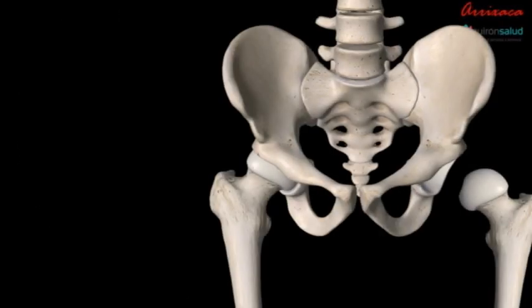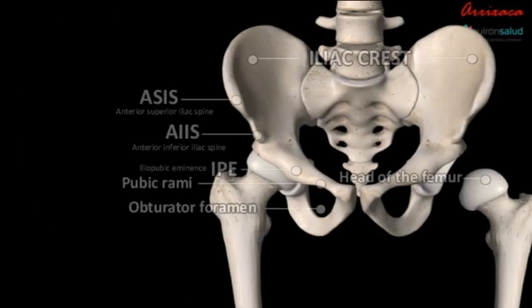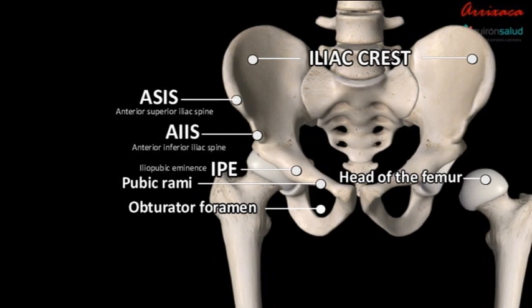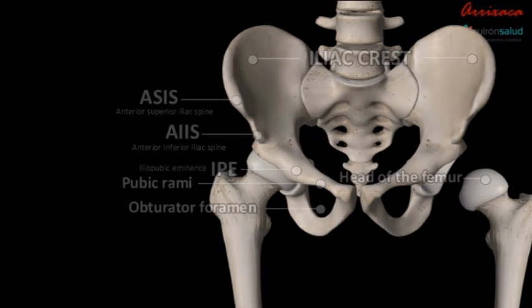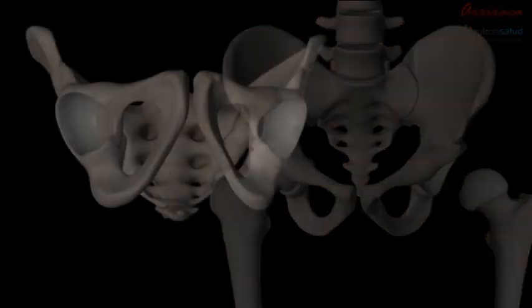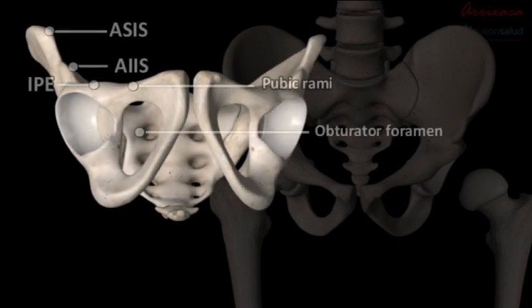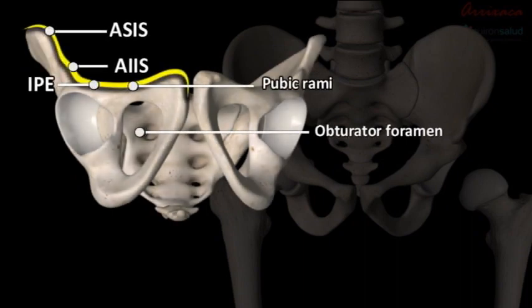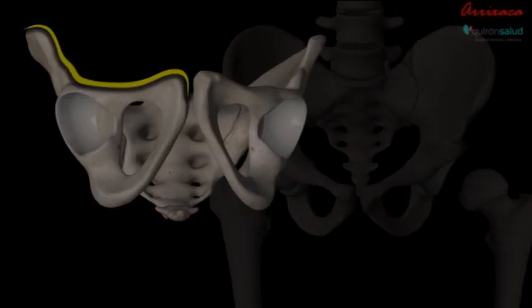The pelvic bones are part of the skeleton embedded in the pelvic region of the trunk. The pelvic girdle is composed of the appendicular hip bones — the ilium, the ischium, and the pubis — oriented in a ring, and connects the pelvic region of the spine to the lower limbs. The pelvic spine consists of the sacrum and the coccyx.